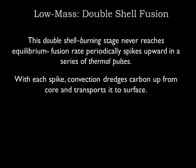We have a hydrogen-burning shell outside of the helium-burning shell and no action in the carbon core. The star is not very stable at this point. The helium fusion rate periodically spikes upward every few thousand years in a series of thermal pulses. With each spike, convection dredges carbon up from the core and transports it to the surface. The hydrogen and helium burning shells won't last more than another few million years, and the core will never get hot enough to fuse carbon — we're getting very close to the end of the star's life.